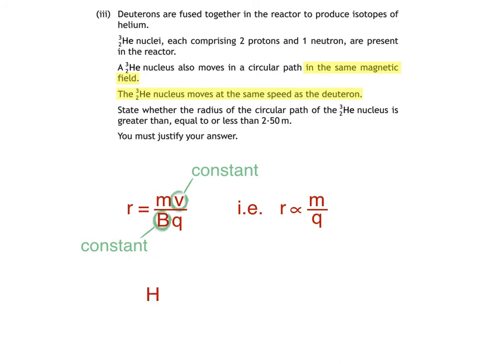This is the deuteron, an isotope of hydrogen, with one proton and one neutron. Remember, its circular path has a radius of 2.5 meters. The helium-3 nuclei consist of two protons and one neutron, so their charge is obviously twice that of the deuteron.